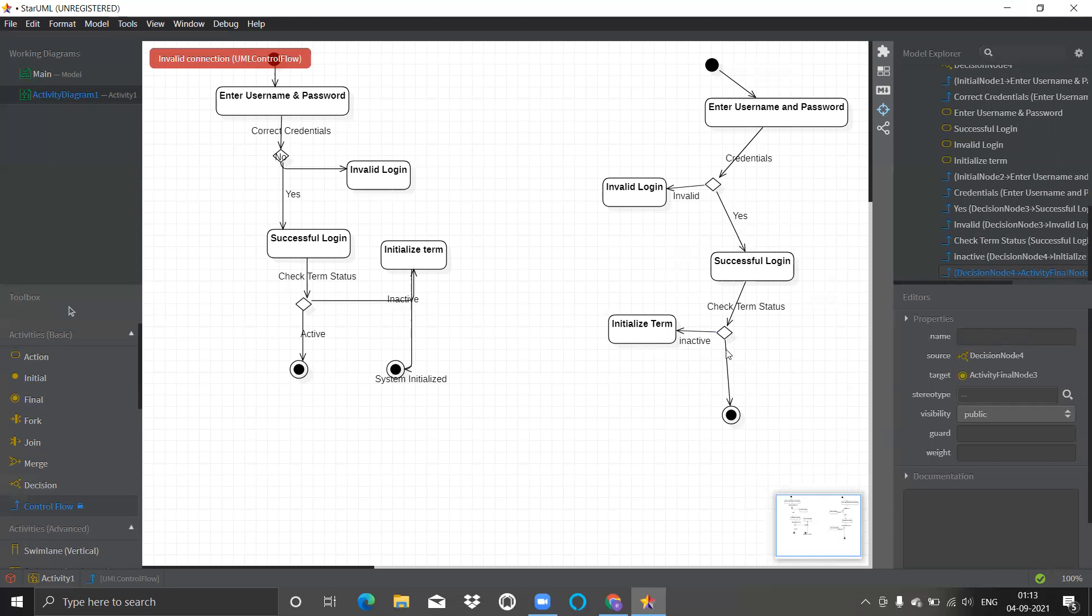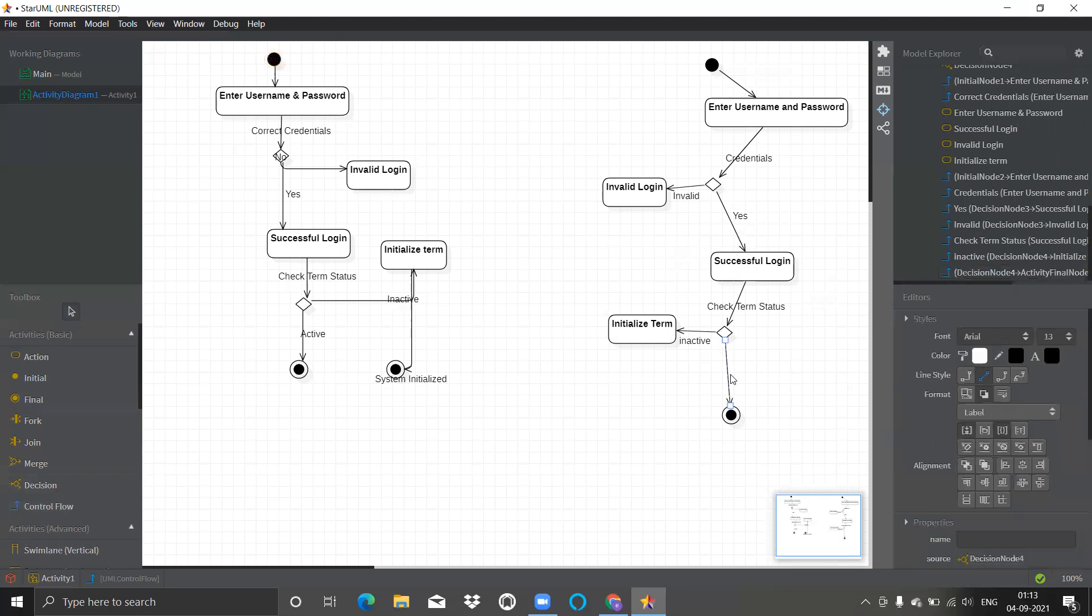Simply click on any of the control flow and you can change the line styles. Automatically it will make the diagram beautiful. You can synchronize this diagram with the proper flow. And then your activity diagram is ready.